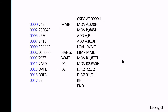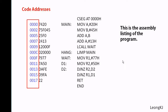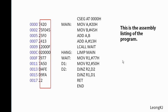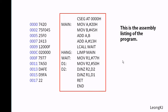This is the assembly listing of the program. This column represents the code addresses. This column represents the machine codes. And this column shows the assembly language program.